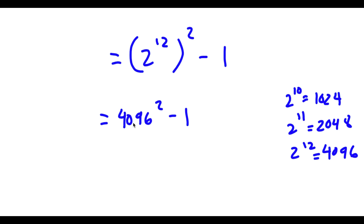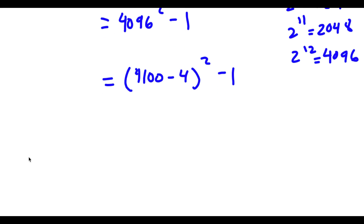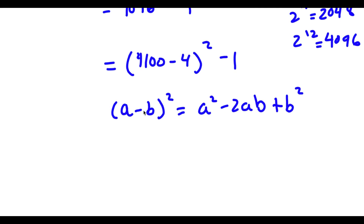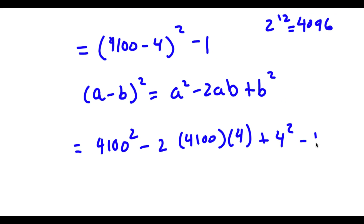Now 4096 we can rewrite as 4100 minus 4. Now I have this squared minus 1. If I have something in the form (a minus b) squared, this is the same thing as a squared minus 2ab plus b squared. So this is going to equal 4100 squared minus 2 times 4100 times 4, plus 4 squared, and I have this minus 1.